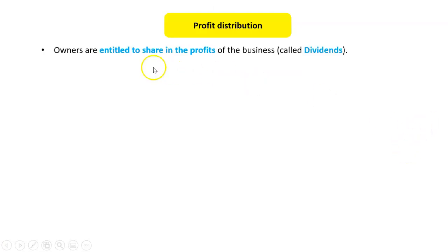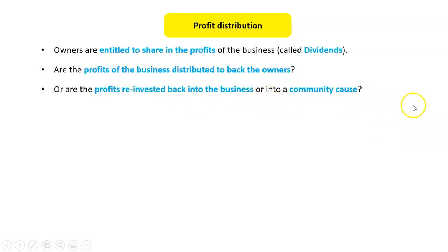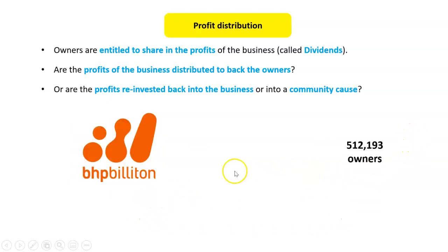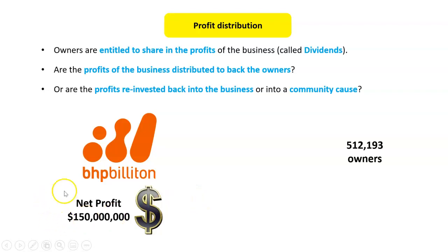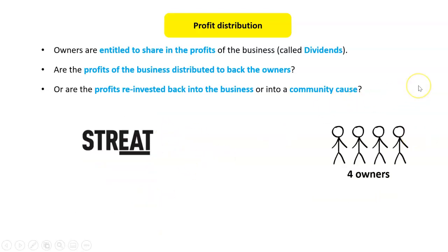Profit distribution is another way businesses differ. A dividend is what owners receive from the profits of the business. With the Hawthorn cobbler store making a net profit of $100,000 and one owner, he gets all of it. With BHP having over 512,000 owners, each person gets a share of the profits proportional to their investment — that share is called a dividend.